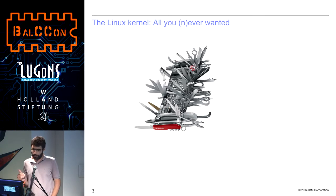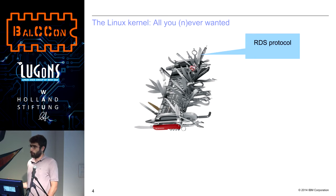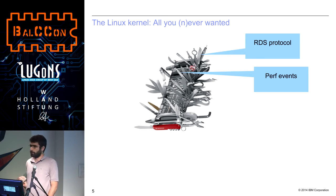What does that have to do with the Linux kernel? Well, the Linux kernel is very much like this giant Swiss Army knife. It is very feature-full — it has everything that you would ever need, but that also means that it has many things that you will never really need. One of such things is the RDS protocol, the Reliable Datagram Sockets. As far as I know, this is used only by an obscure Oracle database. However, it is in the mainline kernel. There are other examples, such as the PerfEvents framework — a very useful framework for performance monitoring of the Linux kernel. However, you might not need that in your production environment.